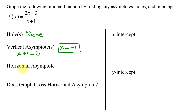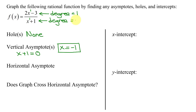Next, does this function have a horizontal asymptote? To answer that question, we need to look at the degree of the polynomial in the numerator and denominator. The numerator has degree 1 — the highest exponent on any x is 1. The denominator also has degree 1. So the degrees of these two polynomials are equal. When the degree of the numerator equals the degree of the denominator, there is a horizontal asymptote, and its equation is y equals the ratio of the leading coefficients.